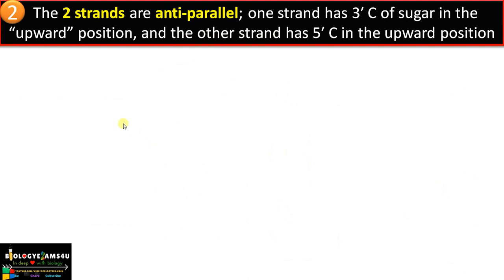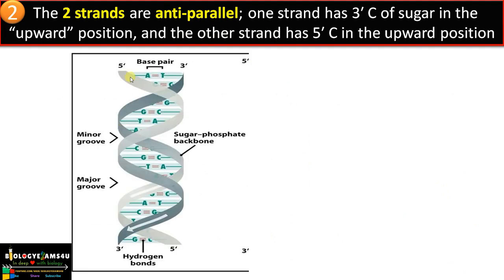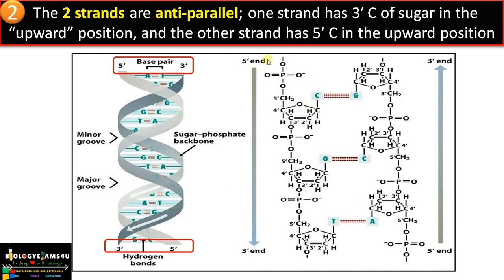Point number three: the two strands are anti-parallel — both run in opposite directions. The first strand runs in the 5' to 3' direction, whereas the second strand runs in the 3' to 5' direction. The 5' end refers to the fifth carbon position of the pentose sugar to which the phosphate is attached.